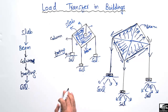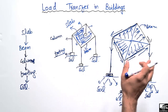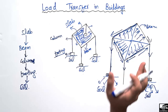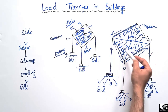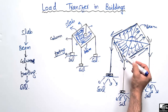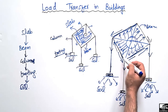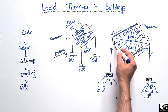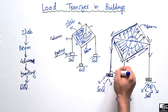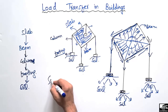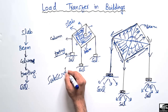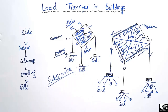So this is how the load is transferred in a frame structure: first the load comes on the slab, then the slab divides the load in a triangular way to the beams, then the beams transfer the load to the columns, the columns to the footing, and finally to the soil. Hope you guys understand how the load is transferred in a building or frame structure. Don't forget to subscribe for more civil engineering videos. Thank you for watching.